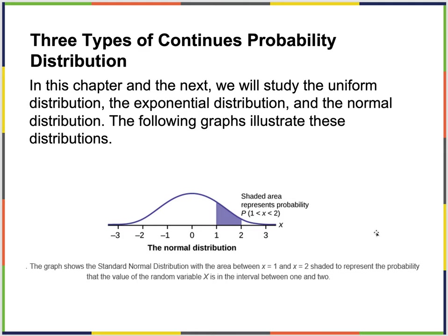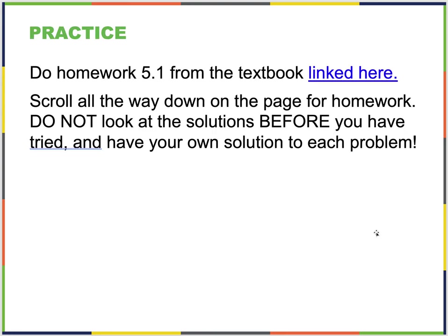Then we will do the normal distribution — the bell-shaped curve. The reason we use standard deviation and not range as our primary measure of dispersion is because the two parameters of the normal distribution are the mean and the standard deviation. If you know those, you know everything about that normal distribution.